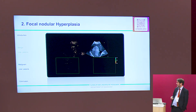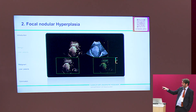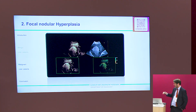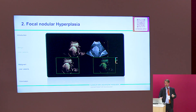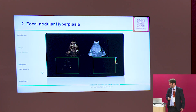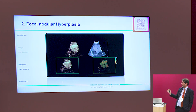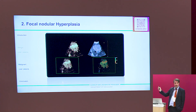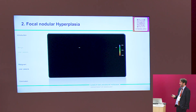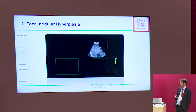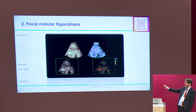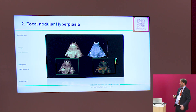Now I show you the new technique. You see the strong uptake and also the time-of-arrival map — red in the center means the first bubbles arrive in the center. This is the central feeding vessel. If we destroy it and look later, you still see the refill — typical behavior of FNH: tiny vessels but strong uptake. In the late phase it is still hyperenhancing — typical pattern for FNH. You can combine conventional color Doppler, grayscale, contrast, and both new settings: either high resolution or time of arrival in a four-panel view.